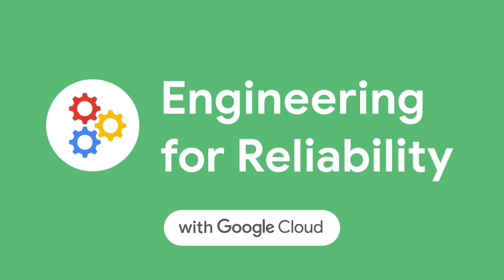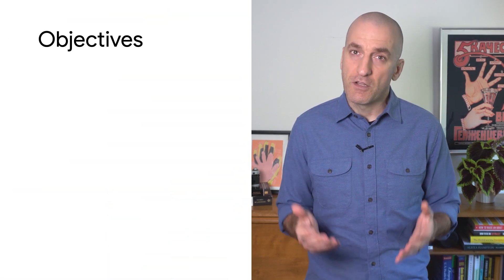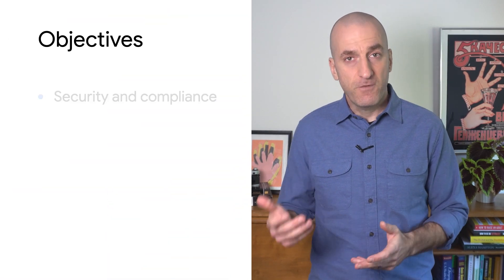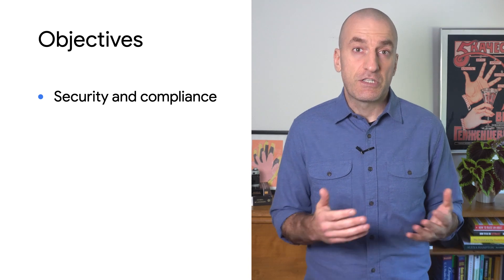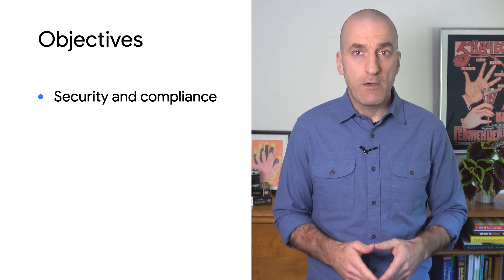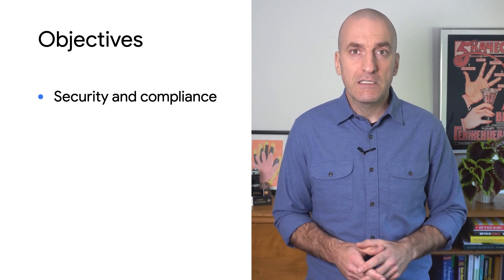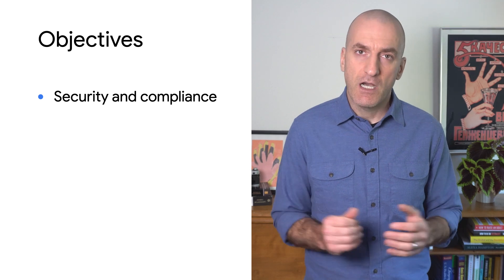Welcome to Engineering for Reliability with Google Cloud. Before we start, let's take a step back and answer this simple question: what do we do all of these things for? What do we try to achieve overall when using a suite like cloud operations? Ultimately, we're after three main objectives. The first one is to ensure that our services are secure and that we comply with policies and regulations that are specifically relevant in our context.